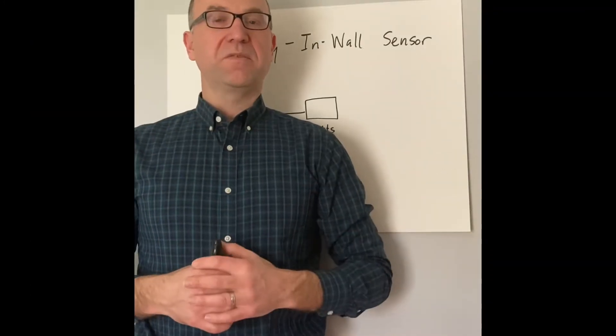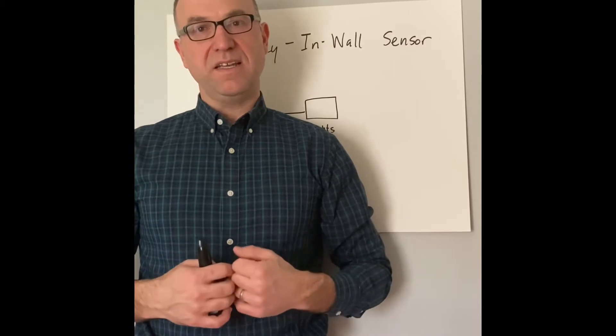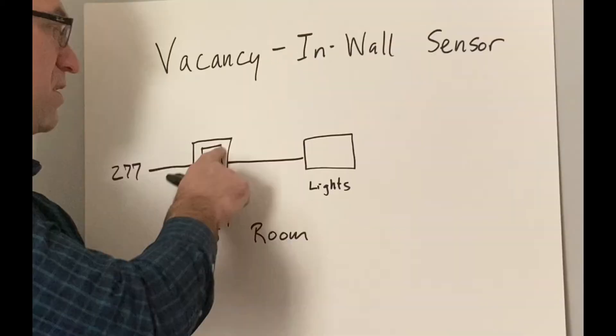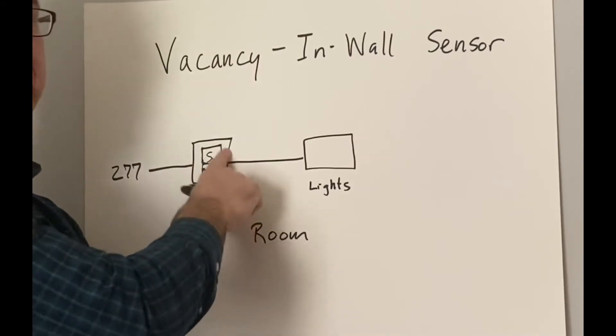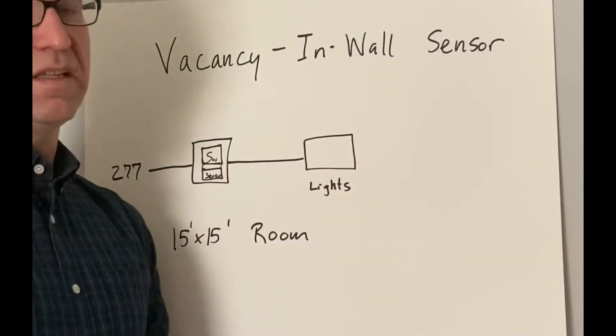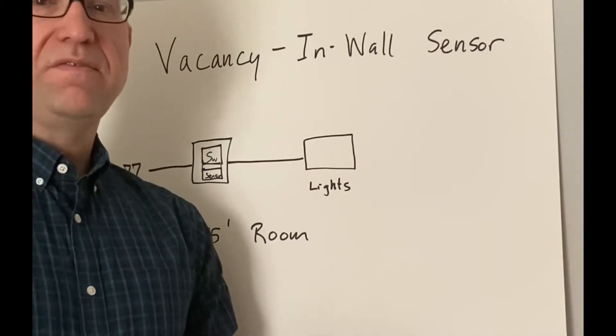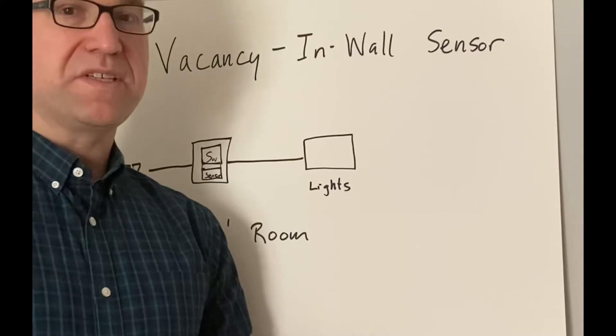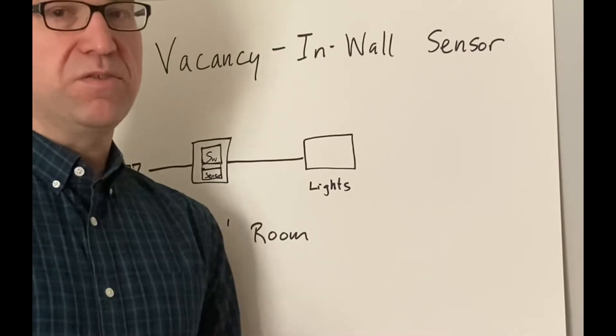So the easiest way to comply with that vacancy setting is with an in-wall motion sensor. Simple. Line voltage in, you have our sensor and switch combined here, and we have line voltage out to the lights. Works for rooms 15 feet by 15 feet or less. Small offices, private offices, break rooms. Easiest way to do it is with this.